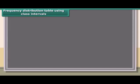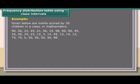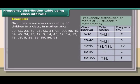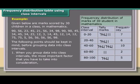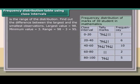Frequency distribution table using class intervals. Given below are marks scored by 30 children in a class in mathematics. The following points should be kept in mind before grouping data into class intervals. First, consider the range of the distribution — find the difference between the largest and smallest observations. The largest value is 98, the minimum value is 3, so the range is 98 minus 3, which equals 95.